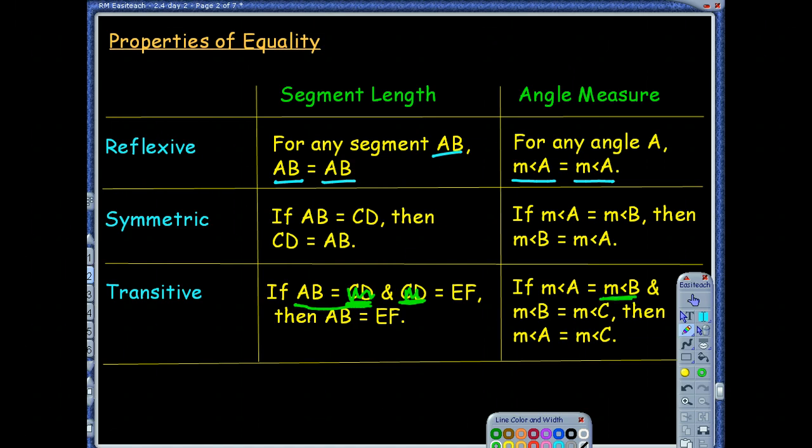Notice we can do it for segment measures, but we can also do it for angle measures as well. Here, measure of angle A is equal to the measure of angle B. Well, that measure of angle B also equals the measure of angle C. Then A and C measures must be equal as well. And one thing I'm noticing here, all these properties are dealing with equality, where we've thrown in this idea of congruence before in the earlier chapter, but now we're seeing that this specifically is talking about equality.